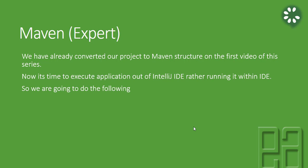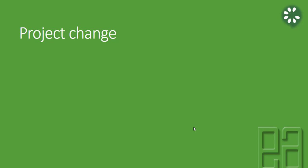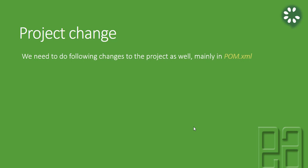So we are going to do the following things: first, download Maven from the website; then set the home path for Maven so you can execute it from the command prompt anywhere; and then run Maven against our project, which is the Cucumber Basic project. The changes needed to run the test outside the IDE will mainly happen in the pom.xml file.